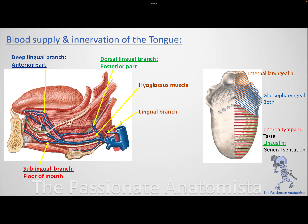The tongue is divided into the anterior two-thirds (body and tip) and the posterior one-third (root), which faces the oropharynx. The posterior one-third faces the pharynx, so the nerve supplying both general sensation (pain, temperature, touch) and special sensation (taste) for the posterior one-third is the glossopharyngeal nerve — 'glossal' for tongue and 'pharyngeal' for pharynx.